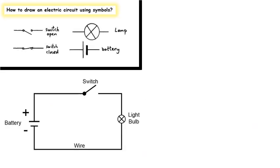A circuit can be drawn as lines and symbols, and each component of the circuit has its own symbol. We have here an open switch, a battery — the lines are the wires — and this is a light bulb.